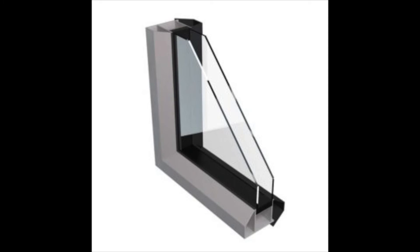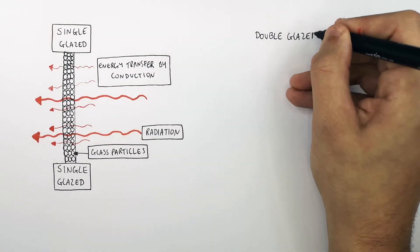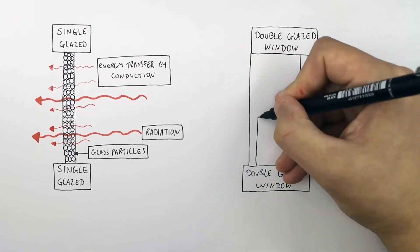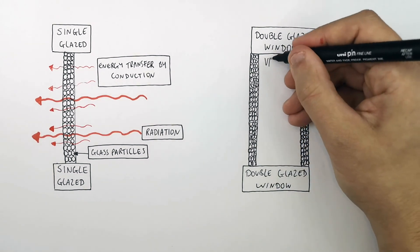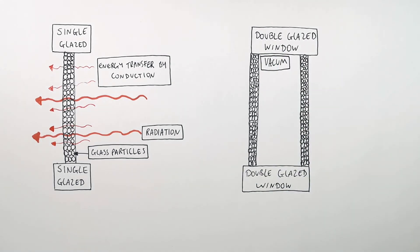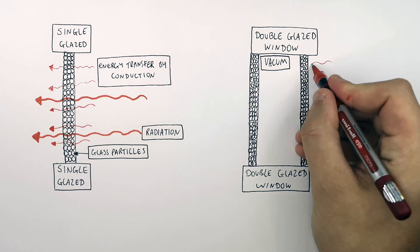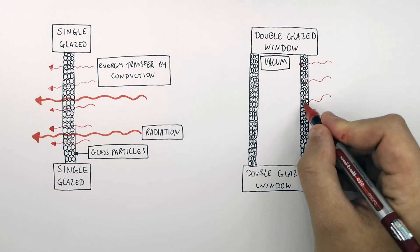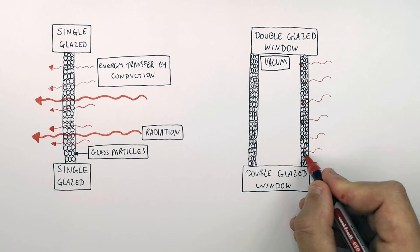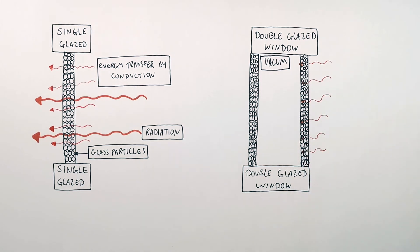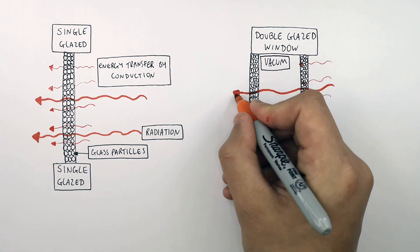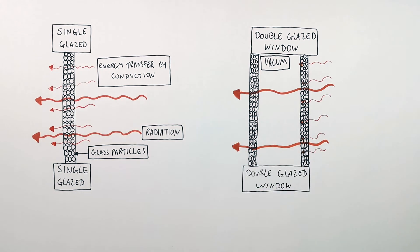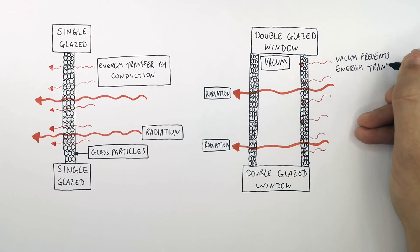Double glazed windows have two panes of glass with a vacuum in between. In each pane the glass particles are arranged as a solid, but between the two panes is a vacuum where there are no particles. Energy can conduct through the glass particles from inside the house, but when it reaches the vacuum, conduction can no longer take place, so energy is not transferred through the gap. However, radiation can still transmit through the glass. A vacuum between two panes of glass therefore prevents energy being transferred by conduction.